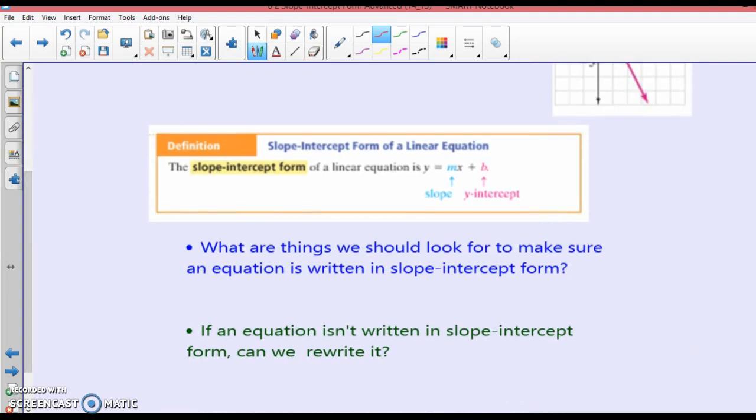Slope-intercept form of a linear equation is y equals mx plus b. You are going to need to know that, and you are going to need to know that m is the slope and b is the y-intercept.